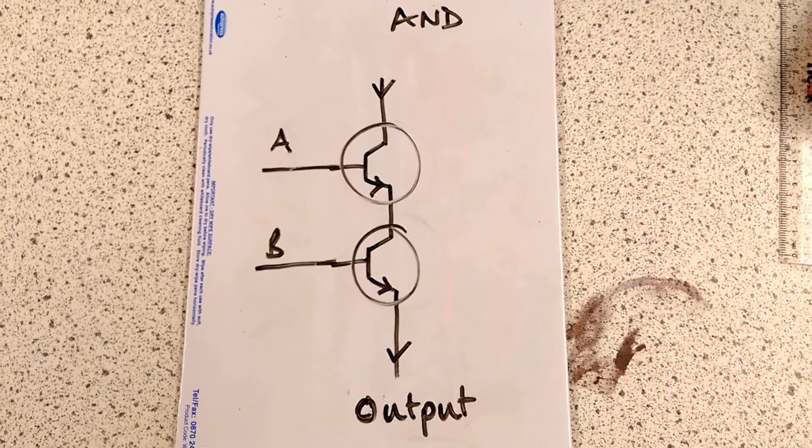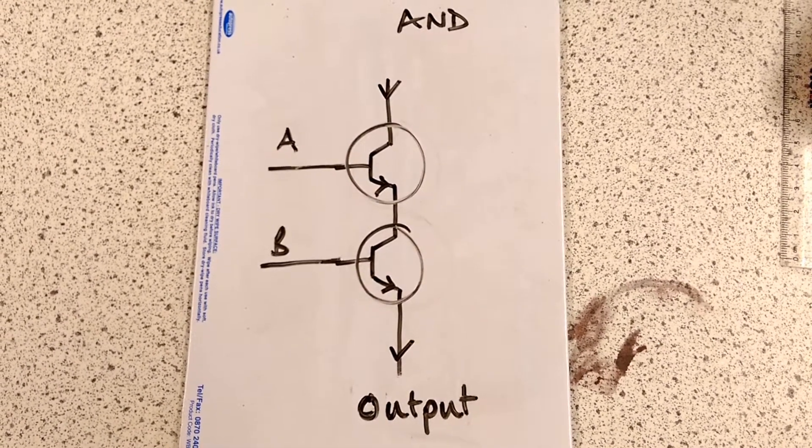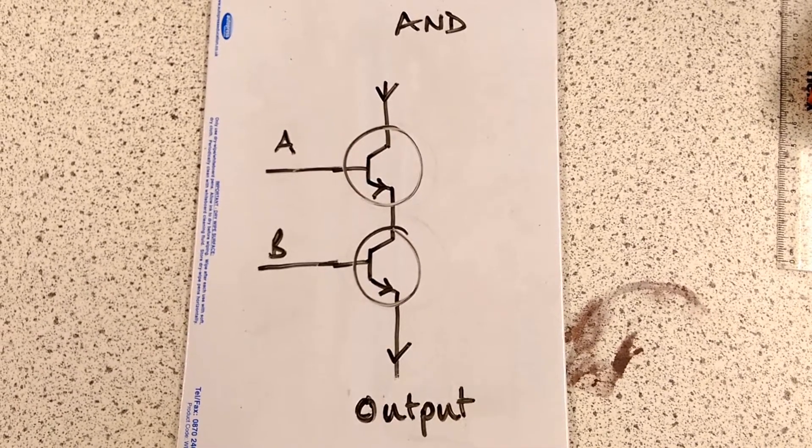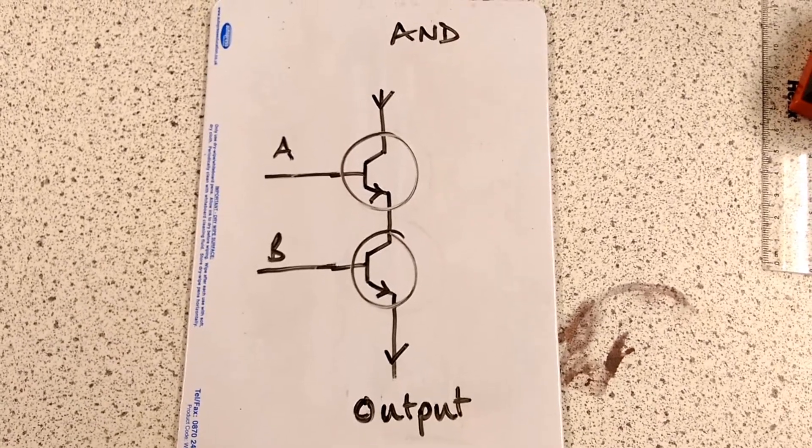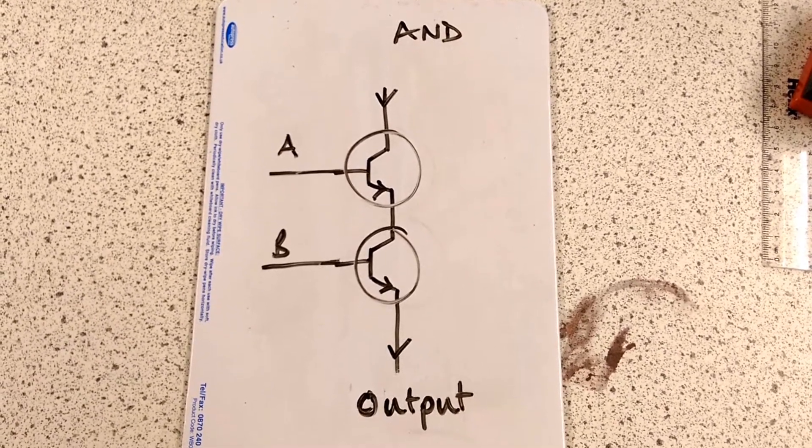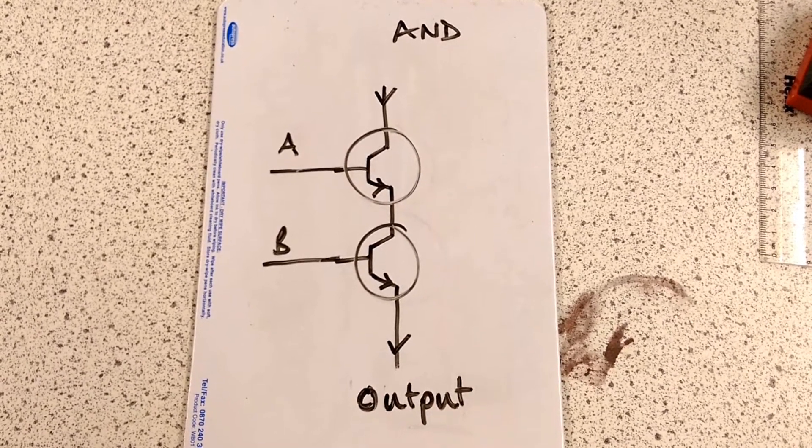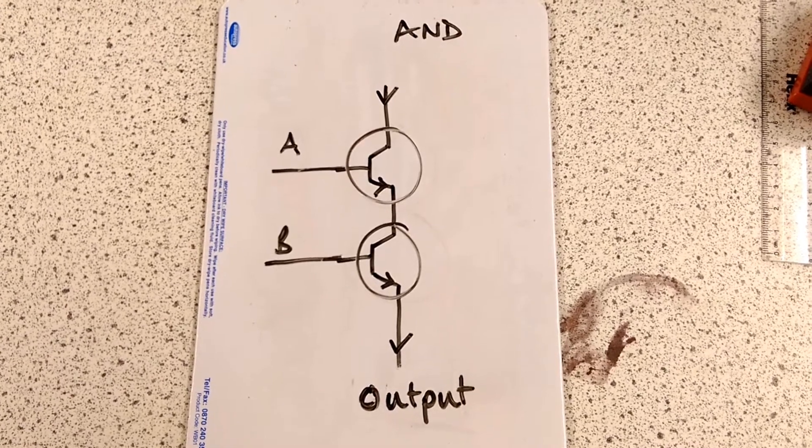So what logic gates are, they're just combinations of transistors. So this for example is an AND gate, and it's two transistors in series. So if you think about what I said to you about how the transistor works, the base current at A or B has to be on for the output, the emitter, to be on. So because these are two in series, both A and B need to be on for the output to be on.